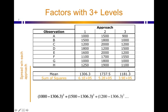and the final approach where the mean value is 1181.3. And we can see that of these approaches, the most spread out approach is approach 1 with the largest number of sum of squares, and the least spread out is approach 3 with the smallest sum of squares.